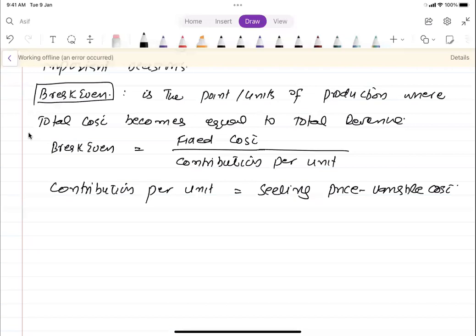This is where costs will be covered and after that profit will start. Break-even is calculated as fixed cost divided by contribution per unit. Contribution per unit is calculated as price per unit minus variable cost per unit.